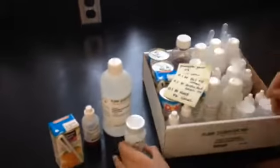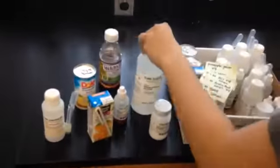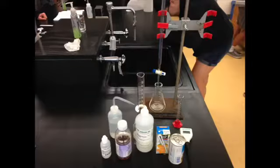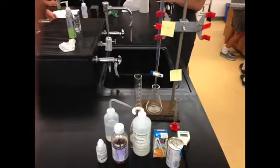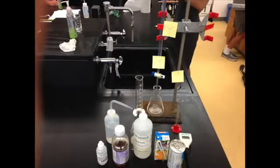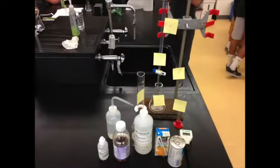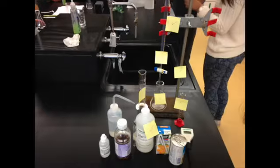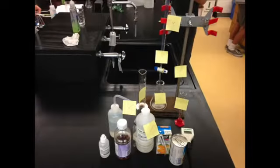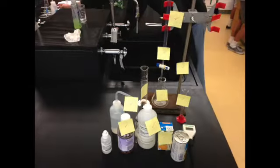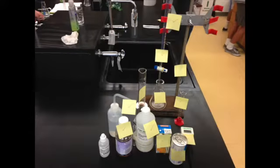The first step of any lab is gathering the proper materials. For this lab, you're going to need a burette clamp, a ring stand, a burette, an Erlenmeyer flask, graduated cylinders, sodium hydroxide, deionized water, white grape juice, orange juice, pineapple juice, a pH meter, and phenolphthalein.